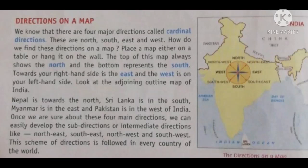Directions on a Map. We know that there are four major directions called cardinal directions. These are North, South, East and West.